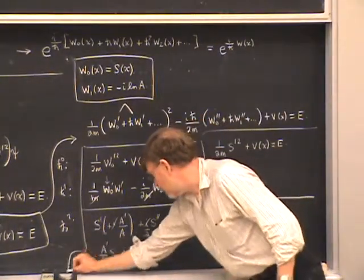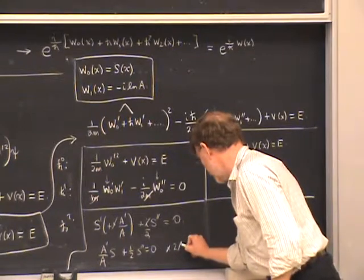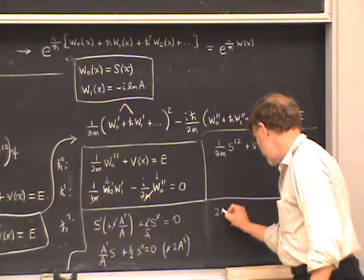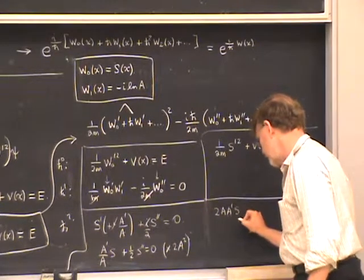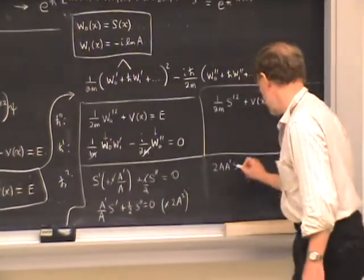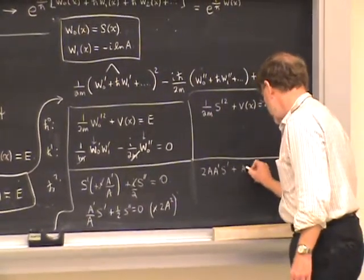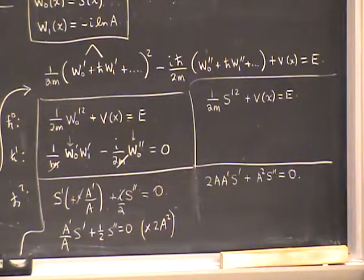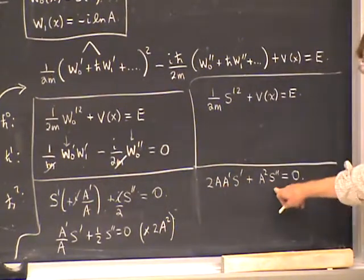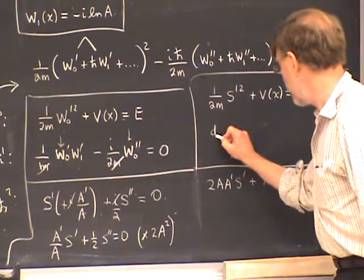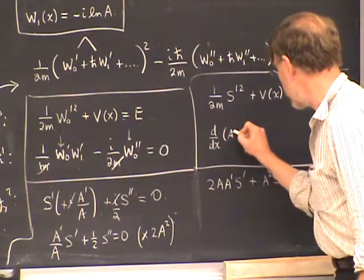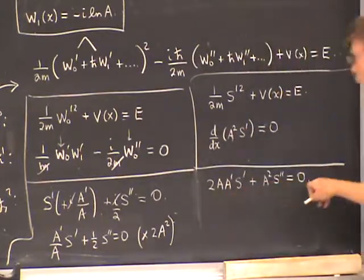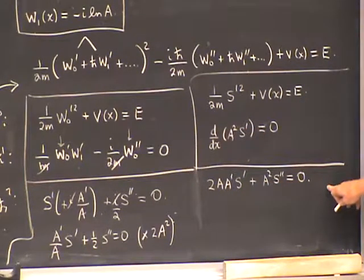Multiplying by 2A², the first term becomes 2A·A′·s′ and the second becomes A²·s″ = 0. This is an exact derivative on the left-hand side: d/dx(A²·s′) = 0. That's the most convenient way of writing this first-order equation. We've now converted back into the s and A variables.